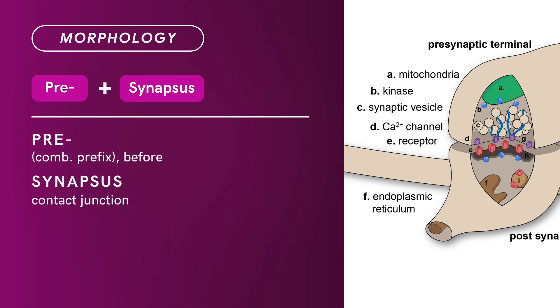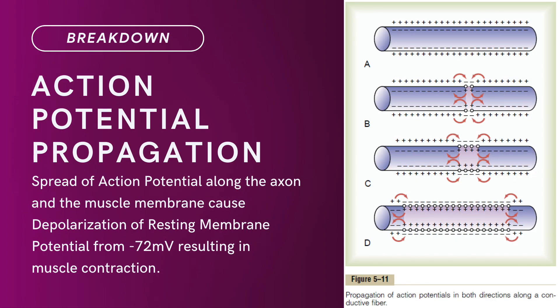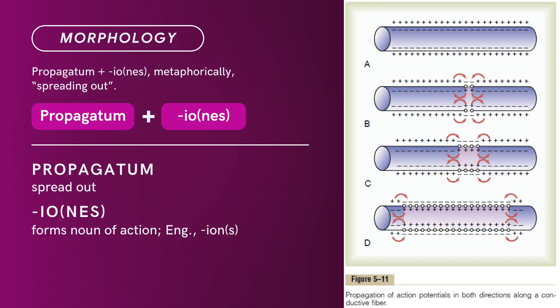Compound Term: Action Potential Propagation. The focus is on the word 'propagation.' Brief Definition: Spread of action potential along the axon and the muscle membrane causes depolarization of resting membrane potential from negative 72 millivolts, resulting in muscle contraction. Term Morphology: compound of propagatum plus -io. Metaphorically, spreading out. Propagatum is a past participle of propagare, meaning to spread out. -Io is a suffix that forms nouns of action.